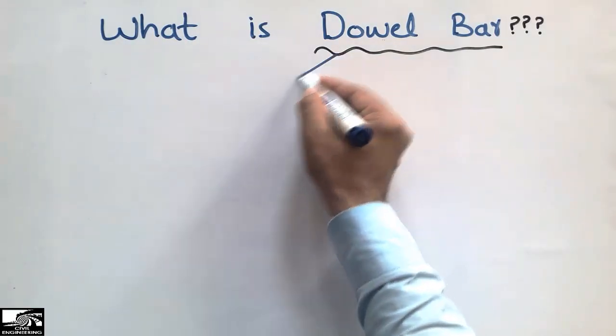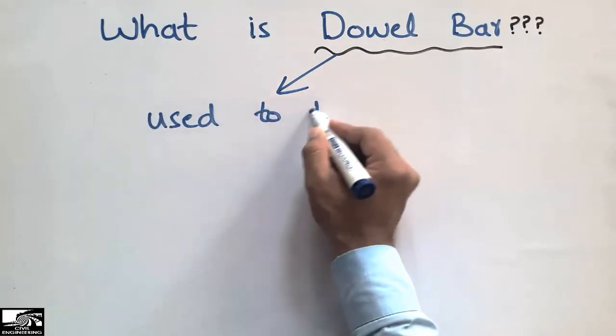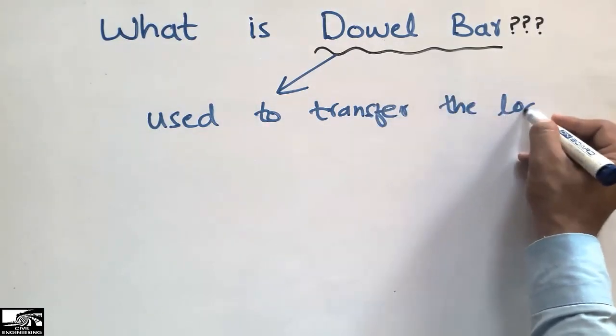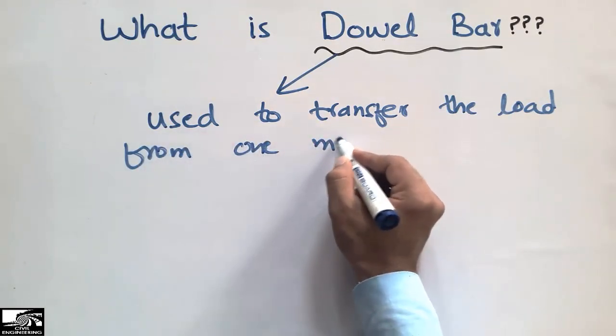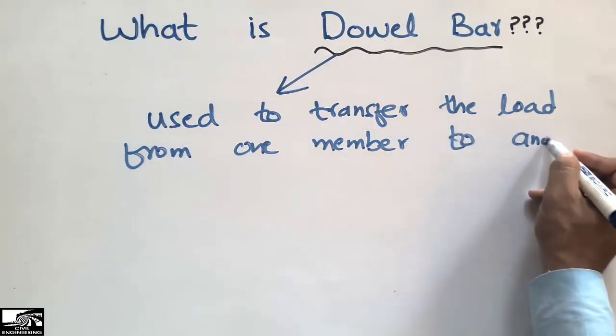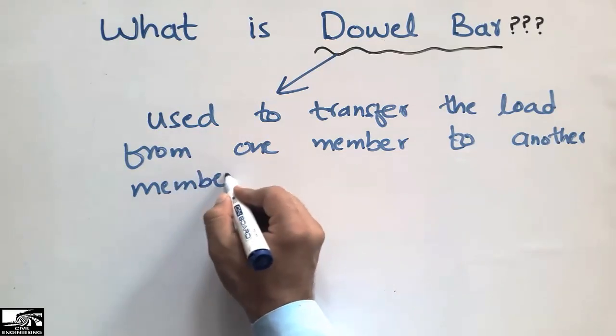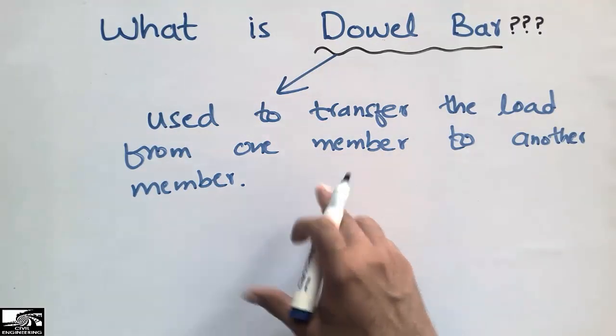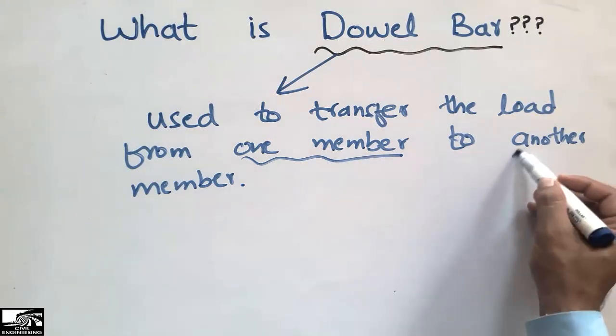To define the dowel bar: the dowel bar is the reinforcement which is used to transfer the load from one member to another member. It is a special type of reinforcement used to transfer the load from one structural member to another structural member.